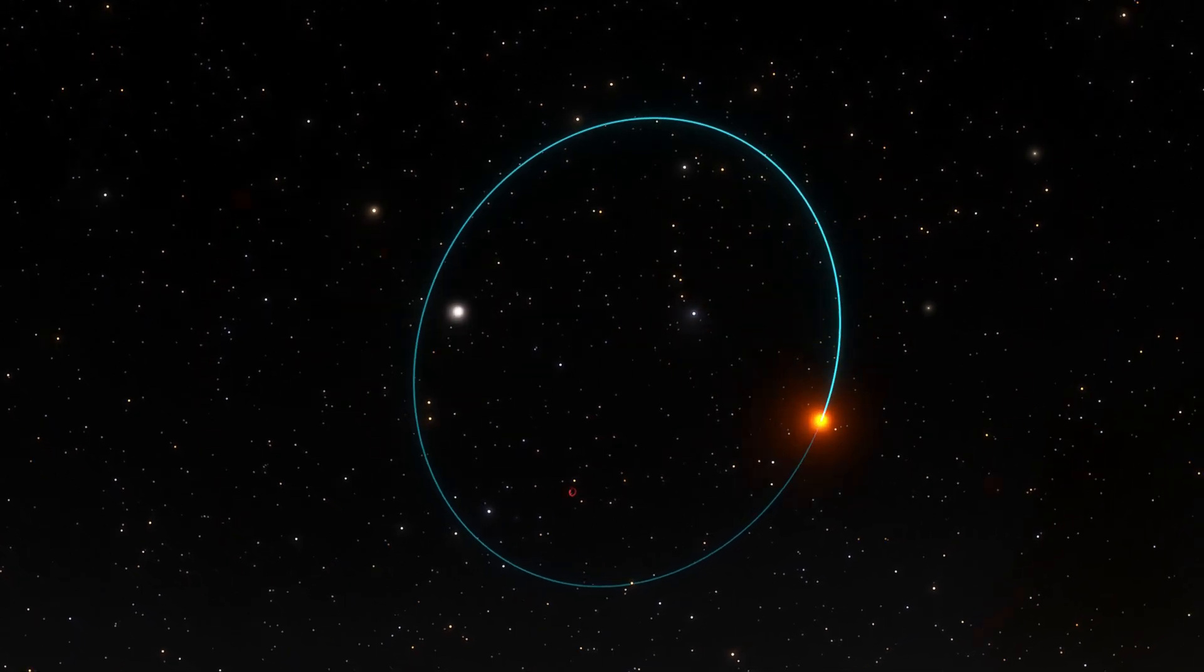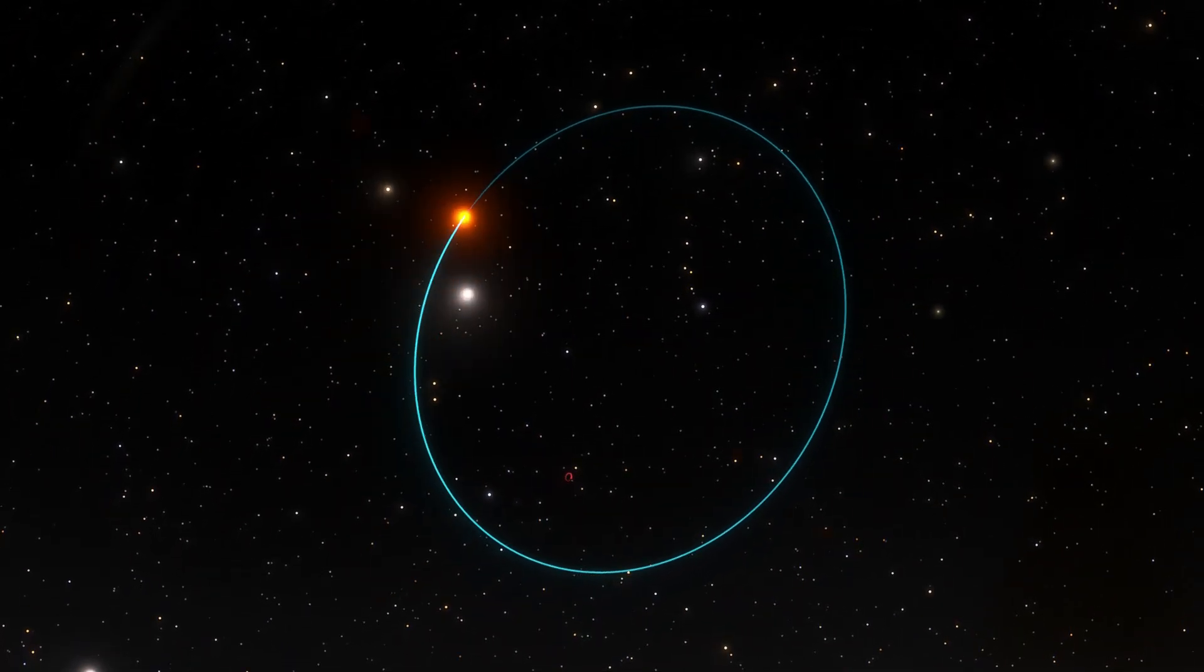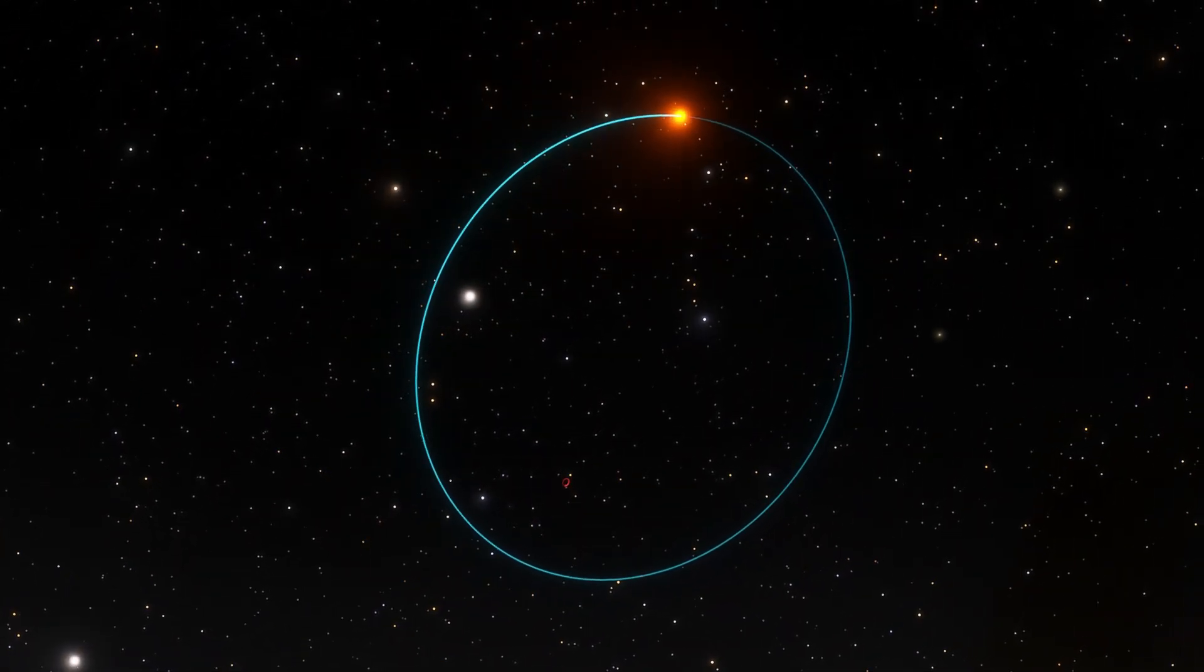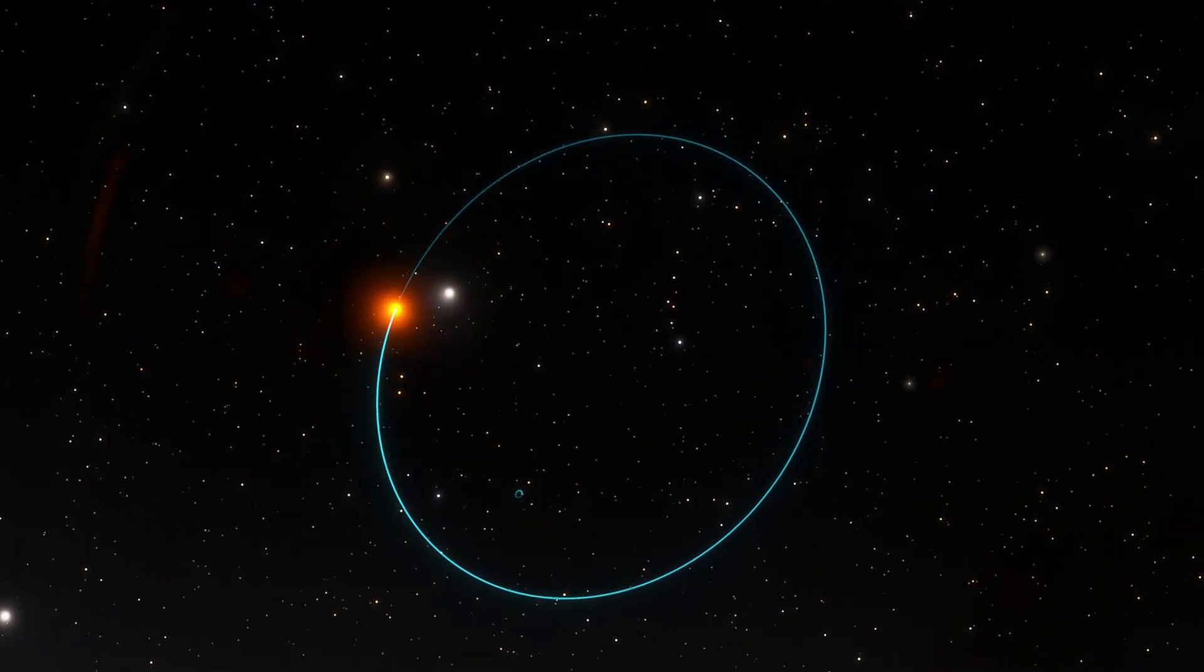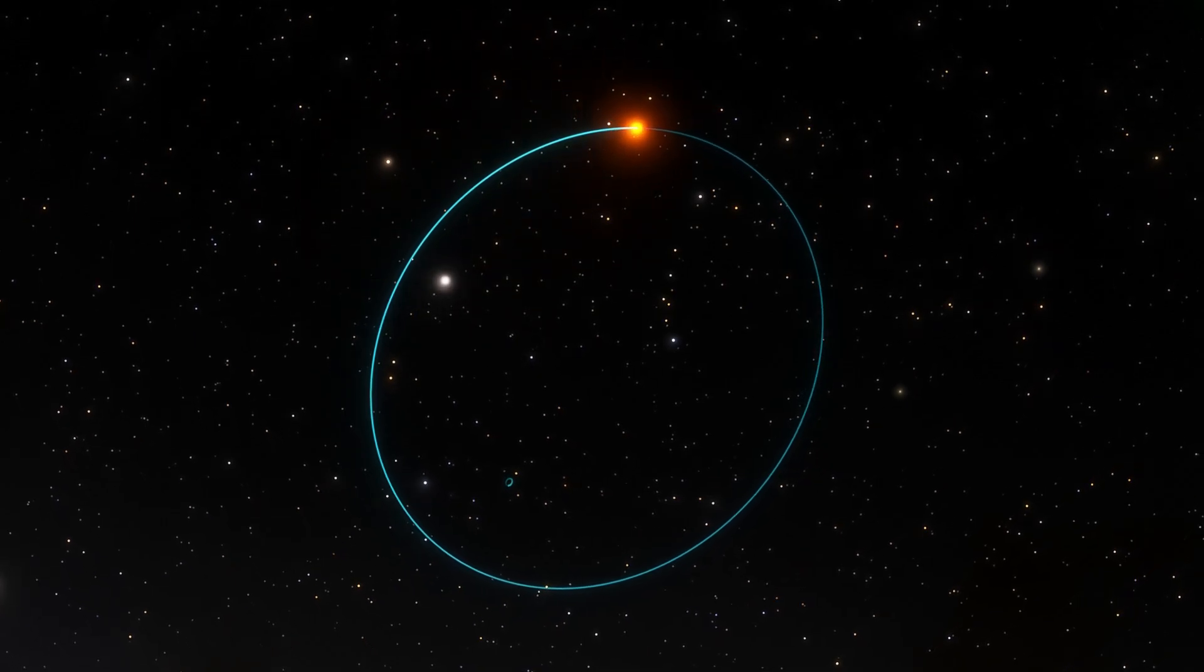When a star orbits something invisible, with gravitational effects indicating a mass that's not visible, astronomers get a hint that a black hole might be present. That's exactly what happened with the discovery of Gaia BH3.